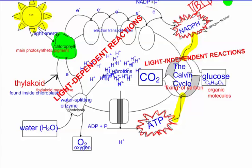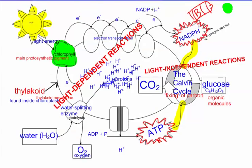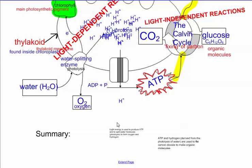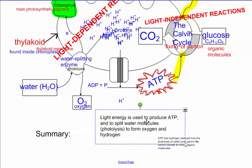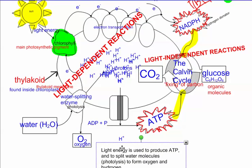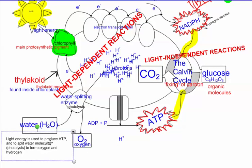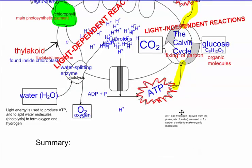So that is it. In summary, light energy is being used to produce those two molecules, ATP and NADPH. Light energy is used to produce ATP and to split water molecules to form oxygen and hydrogen. And then these products here...